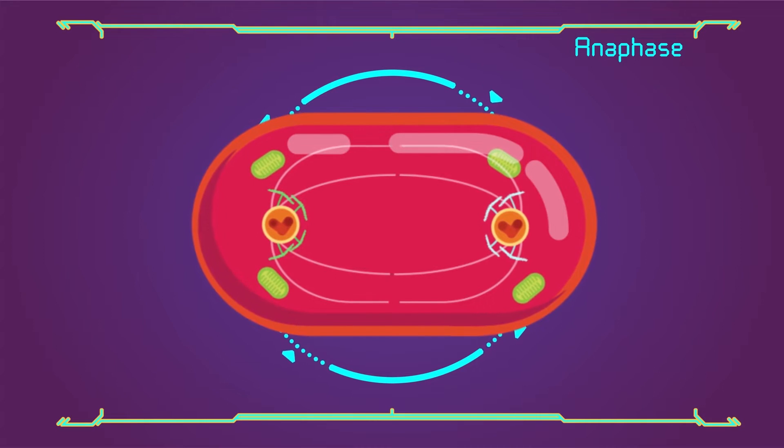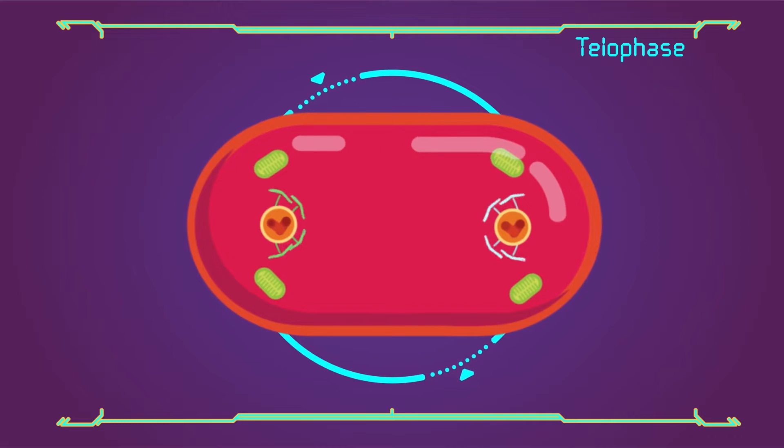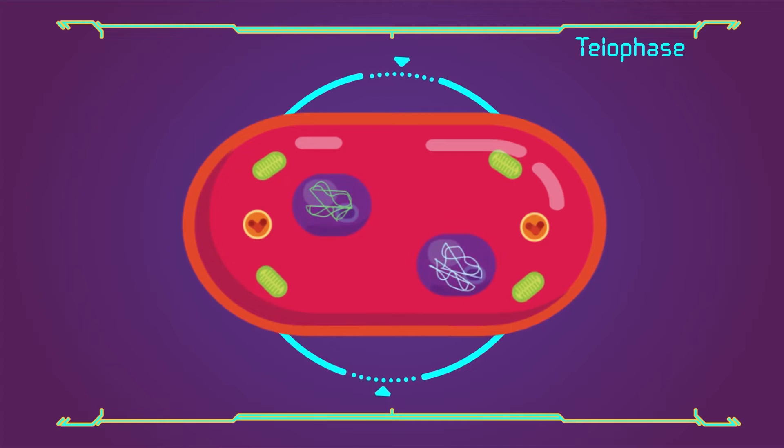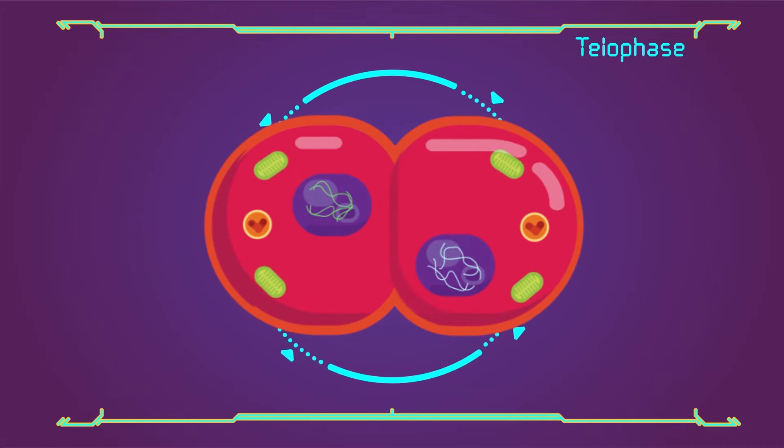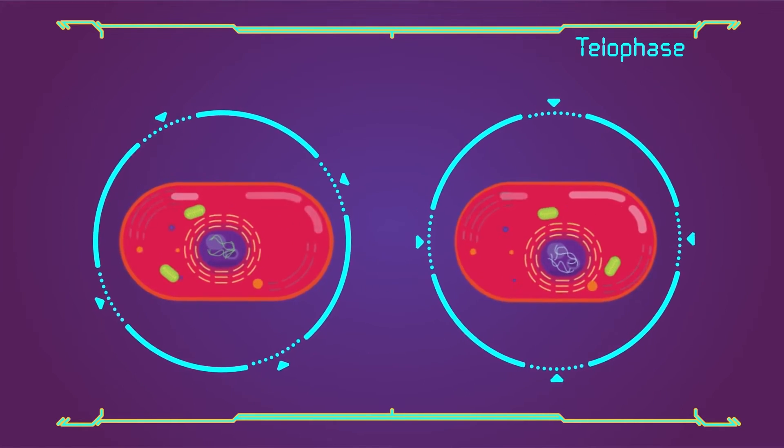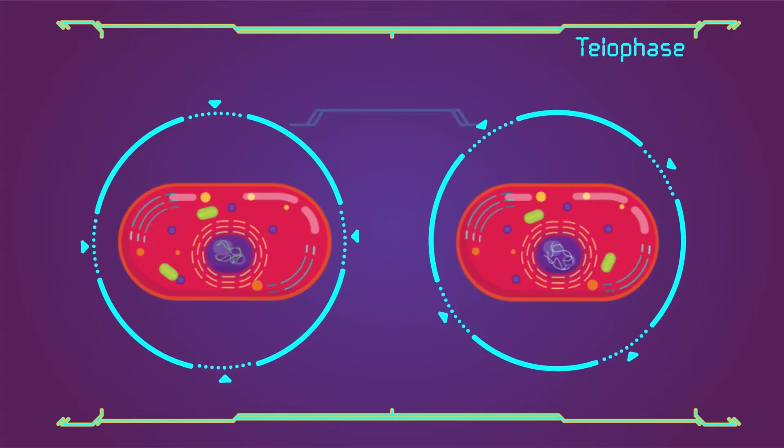Telophase: now the division is finishing up. This is the time when the nuclear envelope begins to synthesize again along the separated chromosomes. Cytokinesis pinches the cell membrane in the middle. Cell membrane closes in and splits the cell into two. Now we have two separate cells, each with half of the original DNA.